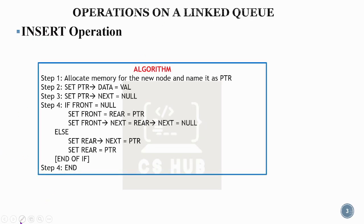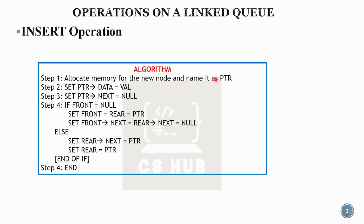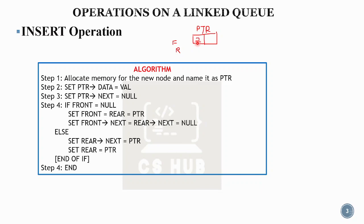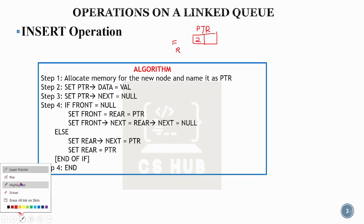This is the algorithm. The first step is to allocate memory for the new node and name it PTR. We add a pointer — this is the new node. The PTR node is created. Then pointer data is set equal to the value, and pointer next is set equal to null. That's why we also have a linked list. If you want to insert at the end, the next pointer will be null.